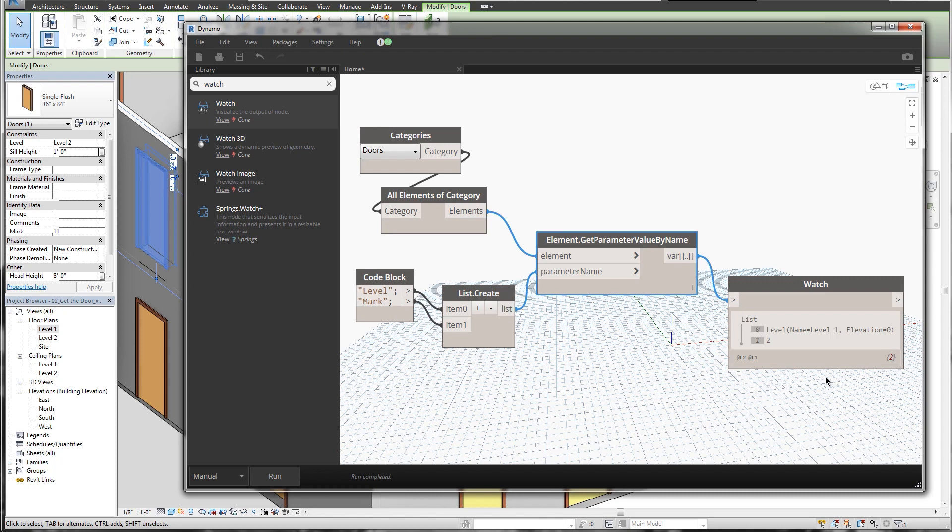Well that has a lot to do with list lacing. And so Dynamo has a way of managing lists when you have multiple inputs. In order to edit the way it combines lists, we modify what's called list lacing.